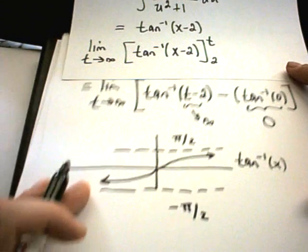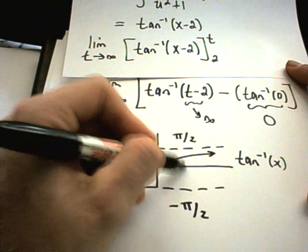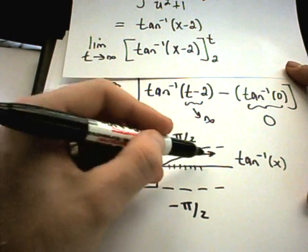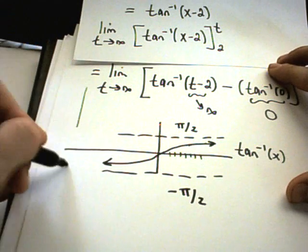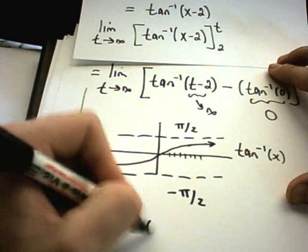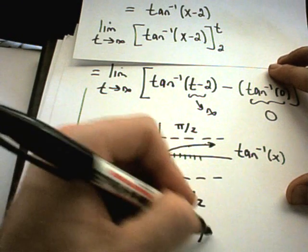So the idea is, well, as you go off to infinity, arctangent is getting closer and closer to pi over 2. So really this whole original limit is simply going to turn into pi over 2 minus 0 or pi over 2.